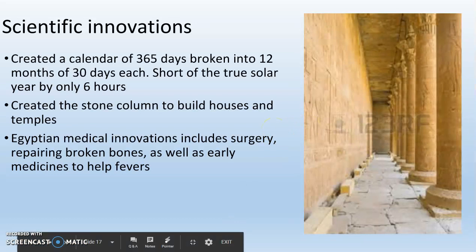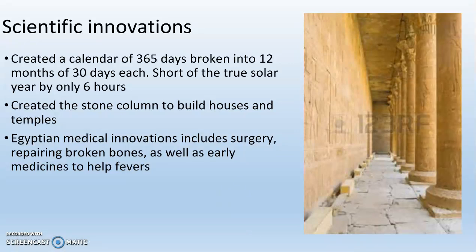The Egyptians are the first people to create a calendar of 365 days broken into 12 months of 30 days each — very close to our calendar, which is scientifically accurate. They're also going to come up with medical innovations like surgery and repairing broken bones, and they created the first medicines that help reduce fever — not like pills today, but plants, like taking a specific plant for a fever, or pounding a plant into a soup or tea to help with a headache.